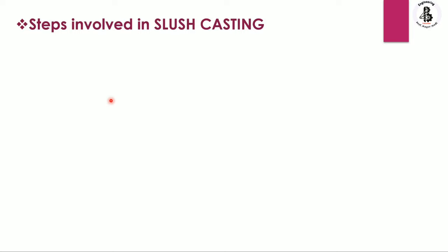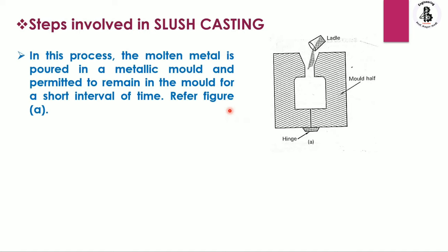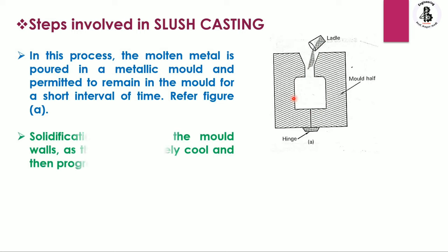So let us start with the various steps involving the slush casting process. Step number one: the molten form of the metal is poured into a metallic mold and permitted to remain in the mold for a short interval of time. Just you can see with the help of the ladle, the molten form of the metal is poured into that cavity. Then solidification begins at the mold walls as they are relatively cool, and then progresses inward.